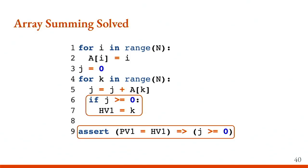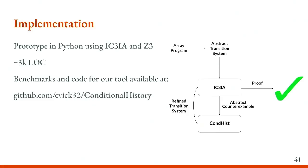For our implementation, the quantifier-free invariant generator we use is IC3IA. Our refinement generator is a tool we built called CONTIS, which stands for conditional history. This took about 3,000 lines of Python code. The benchmarks and code for the tool are available on GitHub for anyone interested.